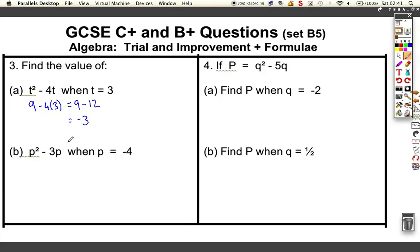This time we've got to find p² - 3p when p is -4. So we're doing (-4)² - 3 lots of -4. That comes out as, well, -4 squared is negative times negative so it's positive 16, and this one comes out as positive because it's -3 times -4, which is +12, so you get 16 + 12 = 28.